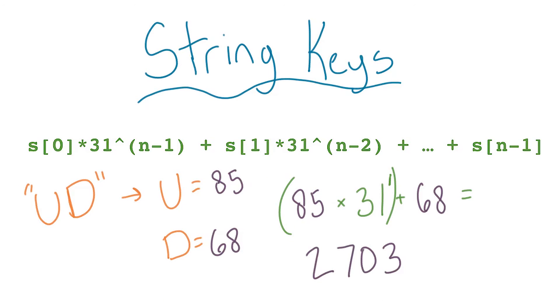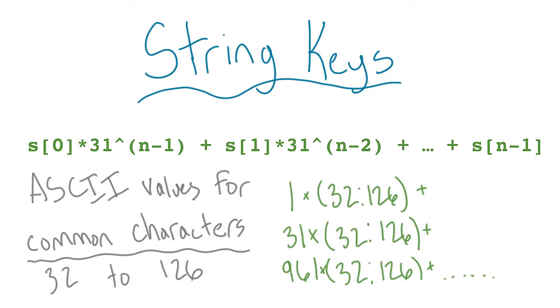Why does this work? Well, by multiplying the ASCII value for each letter by a power of some number, like 31, we can guarantee that every number representation or hash value will be unique to that string.